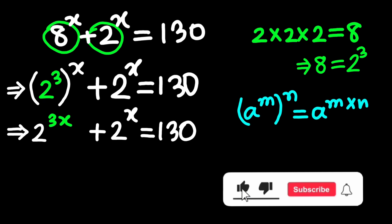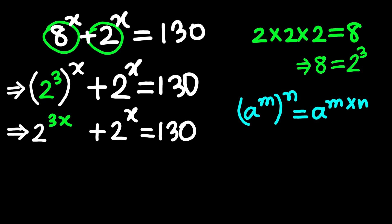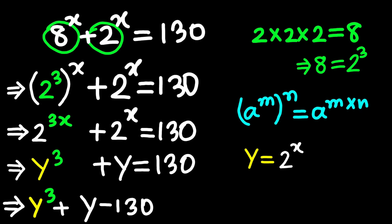Now, both terms are powers of 2, and that's our cue to do a substitution. Let's set y equal to 2 to the power x. That means 2 to the power 3x is y cubed. See how neat that looks? Now our equation is y cubed plus y equals 130. Next, let's bring everything to one side. y cubed plus y minus 130 equals 0.